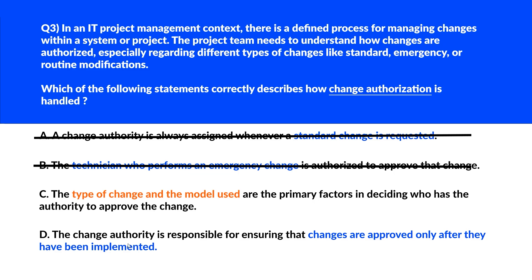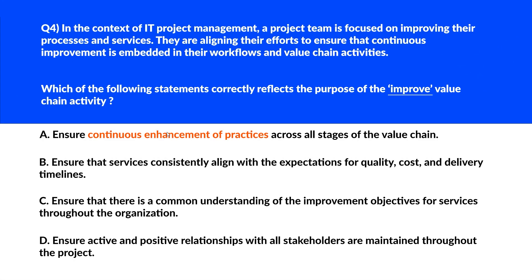Option D says the change authority is responsible for ensuring that changes are approved only after they have been implemented. Typically, changes must be authorized before they are implemented — post-implementation authorization is generally not the standard practice. So we'll reject this option and lock option C as the right answer.